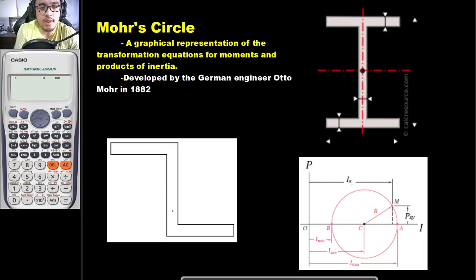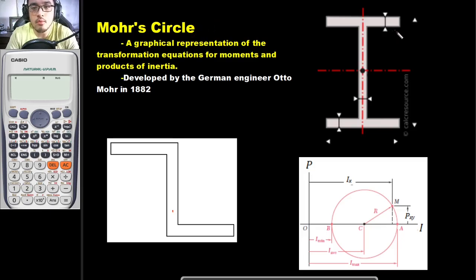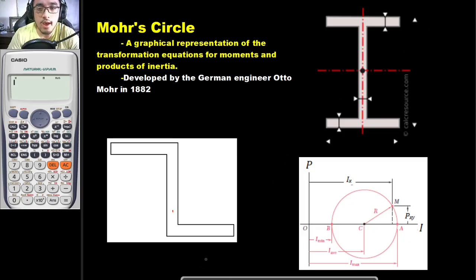Hello everyone. In this video I will be showing you how we would use our Mohr's Circle to determine the moment of inertia of a certain object about any given axis. From the previous pre-recorded lectures, I already showed you how to solve the moment of inertia about the x and y axis using the transfer formula and how to solve for the product of inertia respectively.